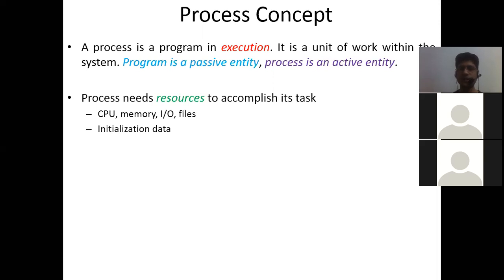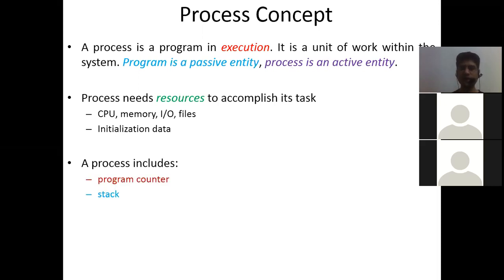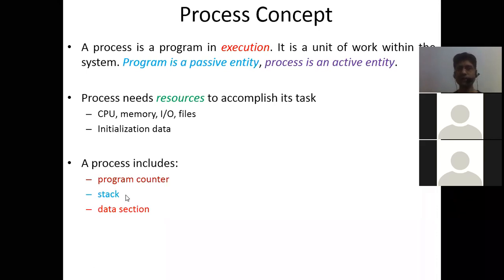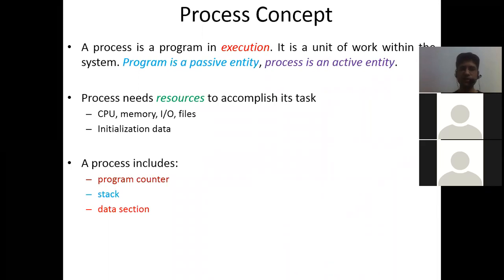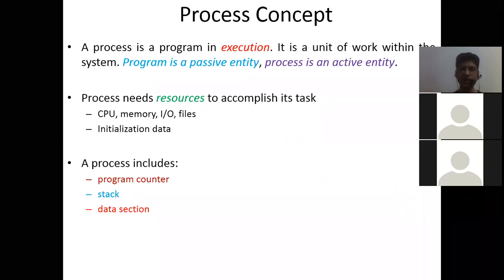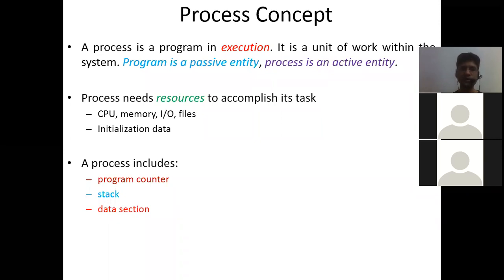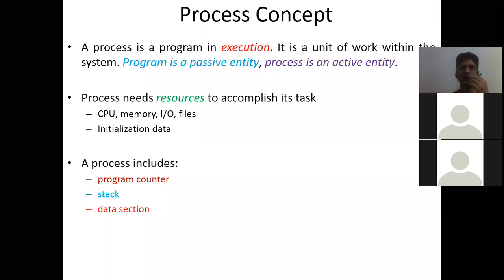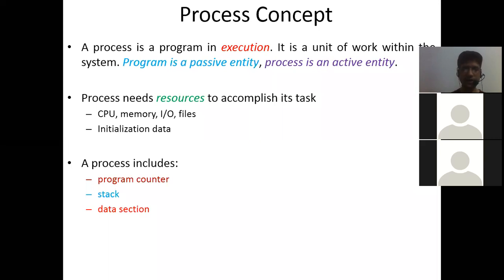The essential ingredients of a process are the program counter, stack, and data section. Think of a stack as a memory space required by the process to store essential information - local and global variables of a program, and what functions are being used. There is also an important concept about computer memory: what is the difference between a stack and a heap?